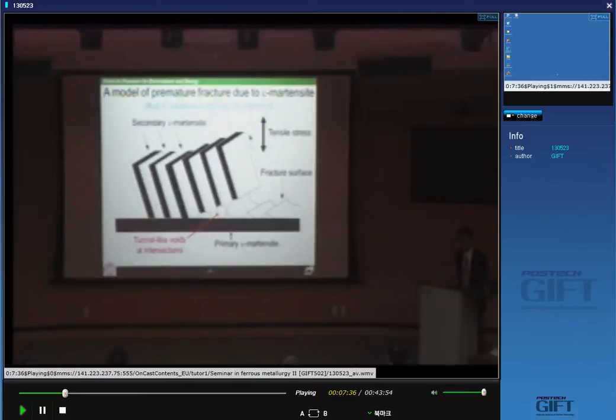This is one of the models to explain a premature fracture caused by epsilon-type martensite. I picked up this figure from the paper of Professor Setsuo Takaki, also Kyushu University, the journal ISIJ International, 1990.